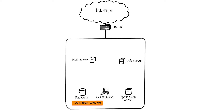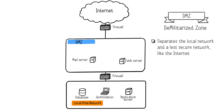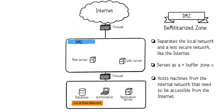The second element of the network security architecture linked to the firewall is the DMZ. The DMZ is an isolated subnet separating the local network and a network considered less secure, like the internet. The DMZ hosts machines from the internal network that need to be accessible from the outside, especially when providing services to internet users such as web servers, proxy, reverse proxy, and DNS servers.